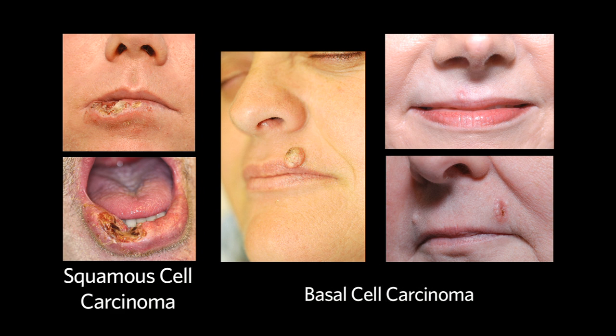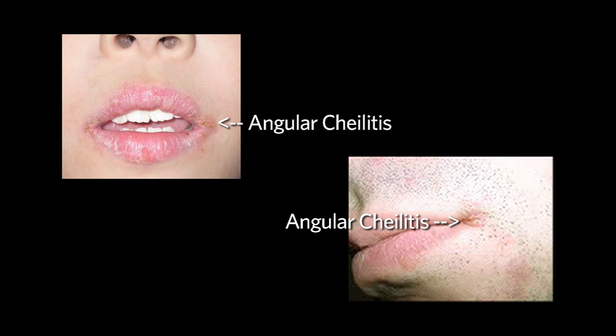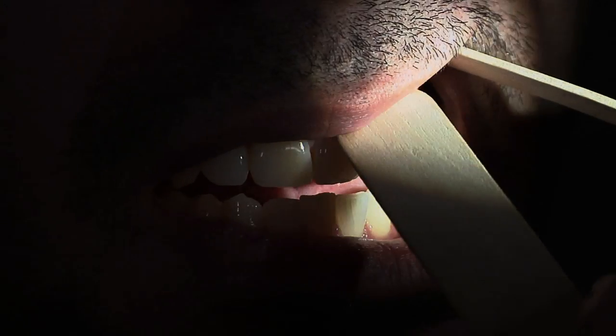Common lesions on the lips include squamous cell and basal cell carcinomas, as well as angular cheilitis, seen in patients who are elderly, have thrush, wear dentures, or are diabetic.